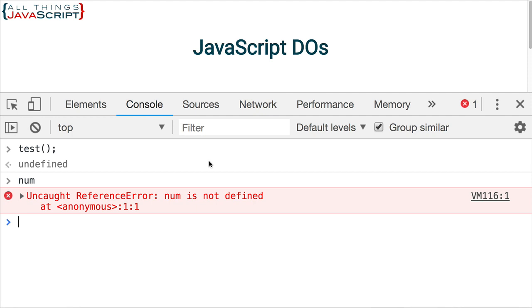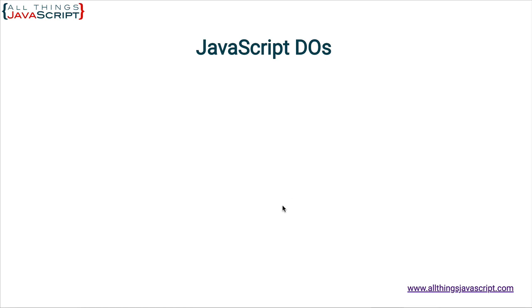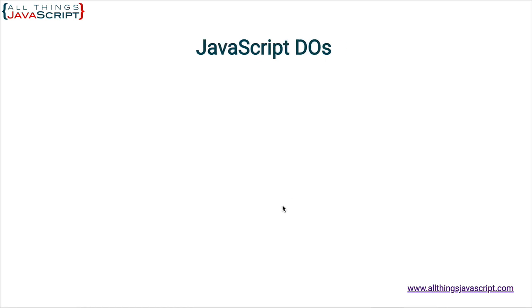A couple of ways to avoid that happening: you can use strict as part of your code, or you can just make sure that you define all your variables. I recommend that you define all your variables — just get in the habit of doing that. And define them at the top of your code, that way you know they're always in one place. So always declare your variables.